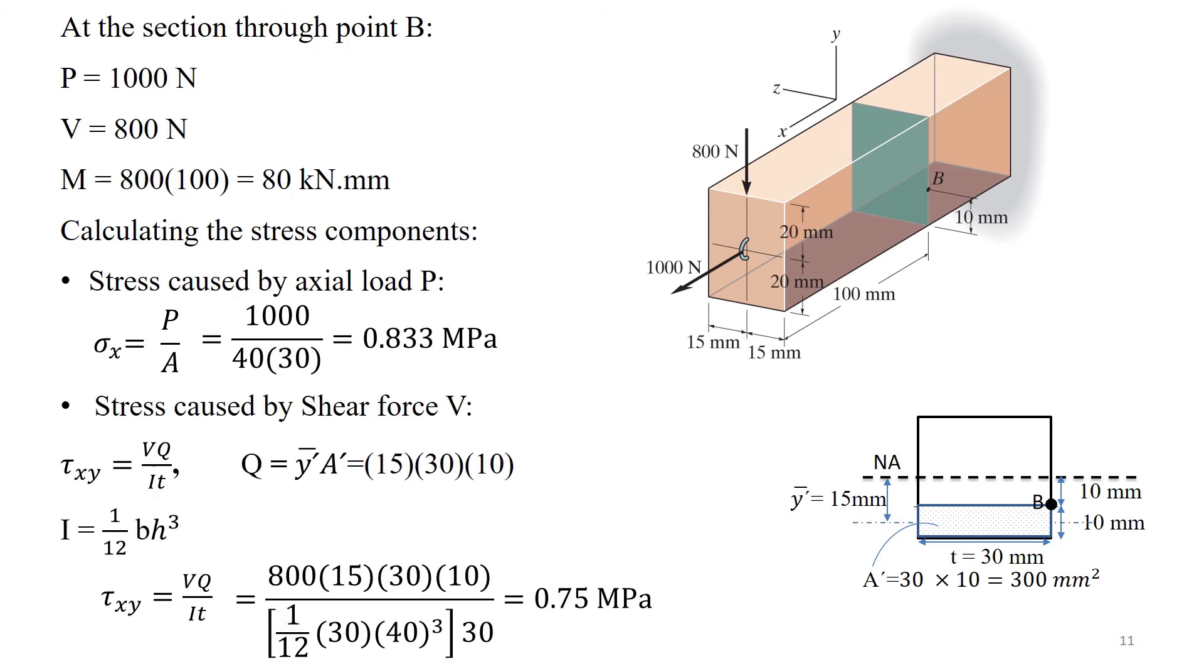Shear stress caused by shear force V can be calculated using the formula tau XY equals VQ over IT. Q equals Y bar prime times A prime, where A prime is the area of the bottom portion of the member's cross sectional area below the section plane at point B where tau is measured, and Y bar prime is the distance from the NA to the centroid of A prime, which in the example is 15 mm.